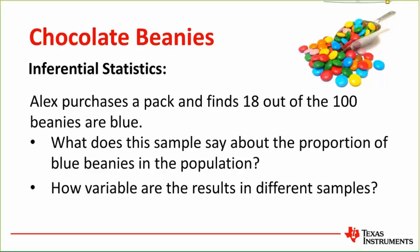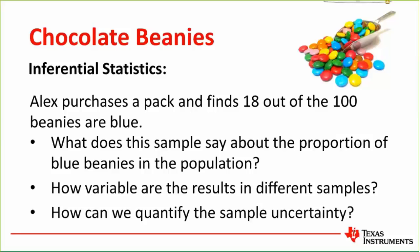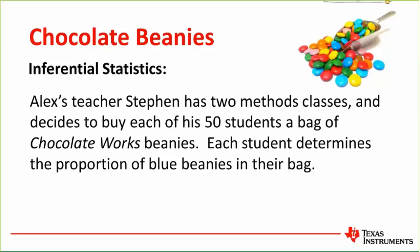We start taking samples, see how those numbers vary from trial to trial, plot them out and form a distribution. What sort of uncertainty do we have around the sample once we start quantifying things? Alex's teacher Steven has two methods classes and decides to buy each of 50 students a bag of beanies, giving us some idea of a distribution of this sample.